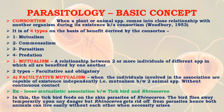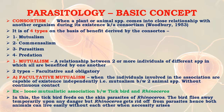When we talk about the basic terms in parasitology, we come to the association and a phenomenon called consortism. What is consortism? When a plant or animal species comes into close relationship with another organism during its existence, it is known as consortism. According to Woodbury 1953, it is of four types based on benefit derived: mutualism, commensalism, parasitism, and predation.